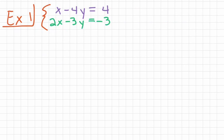For our first example, we have the equations x minus 4y equals 4, and then we also have 2x minus 3y equals negative 3. Now both of these equations are written in standard form, and the easiest way to graph a problem in standard form is just to identify what the intercepts are.